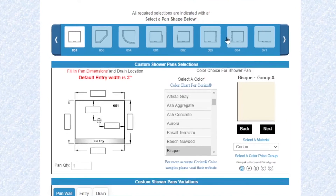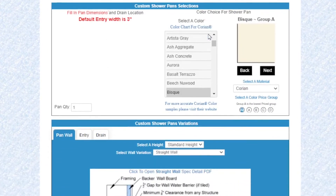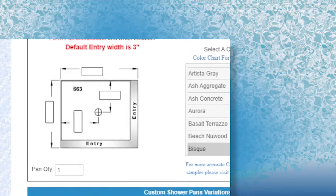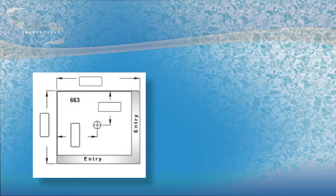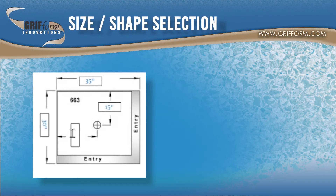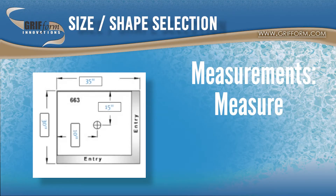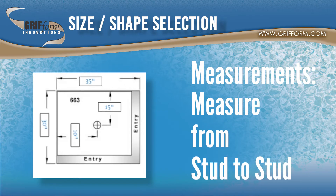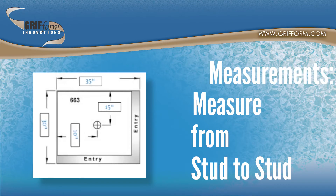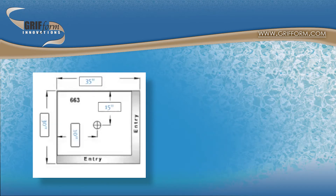The general layout for the shower pan builder pages is to begin by selecting a shape. Then, depending upon whether you're designing a custom or standard shower pan, you can either select a size or input your custom size.